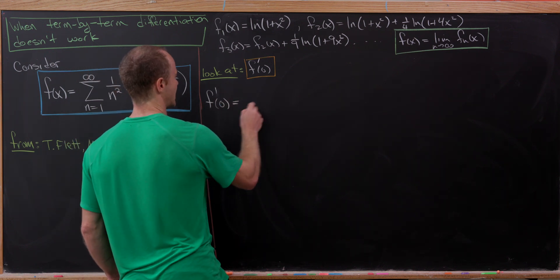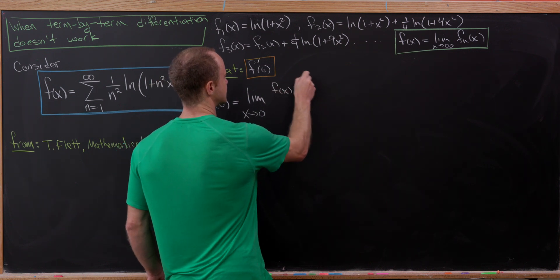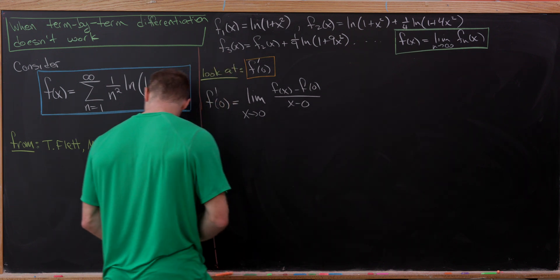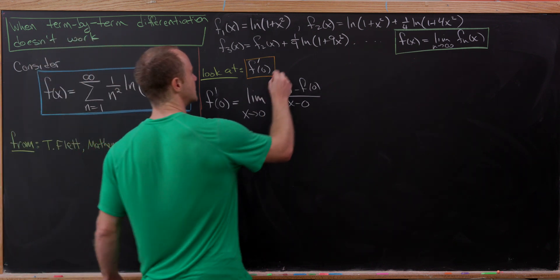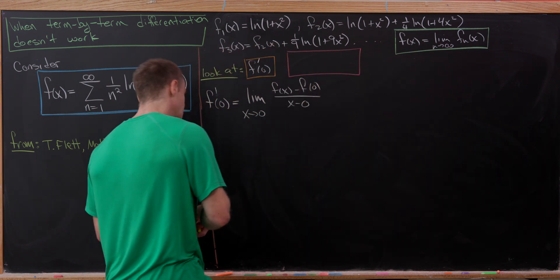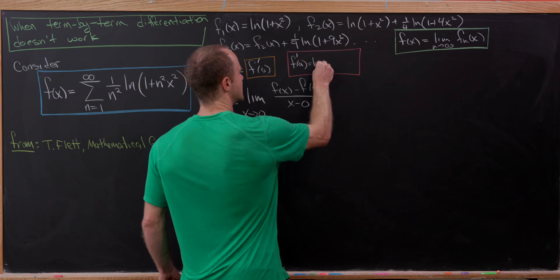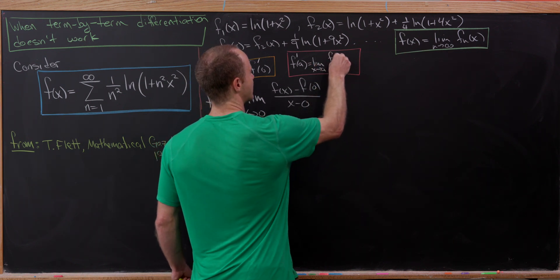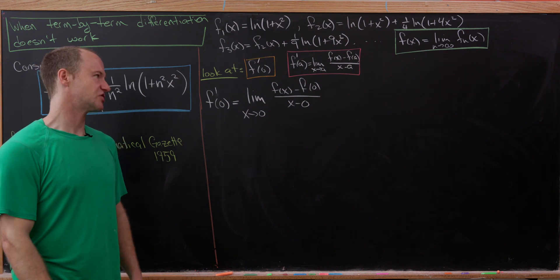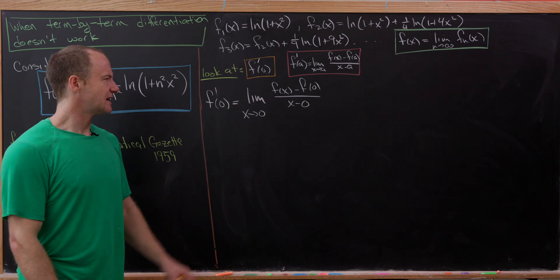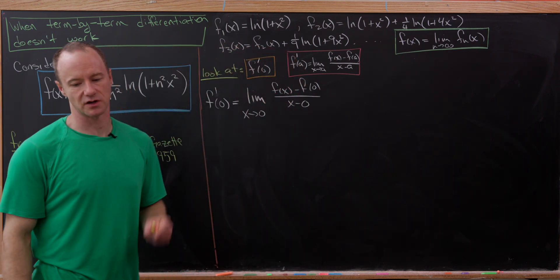We'll take the derivative of f at 0 using the limit definition of the derivative. So this will be the limit as x goes to 0 of f(x) minus f(0) over x minus 0. More generally, f'(a) equals the limit as x goes to a of f(x) minus f(a) over x minus a, which can be changed to the standard limit definition by setting x equal to a plus h. Now, f(0) is clearly equal to 0 because we get the sum of copies of natural log of 1, and natural log of 1 is 0.